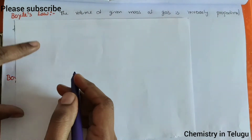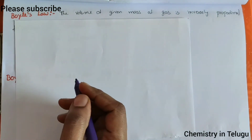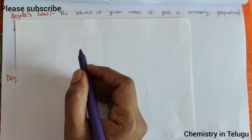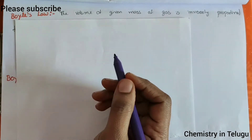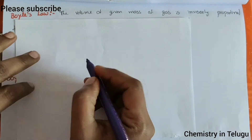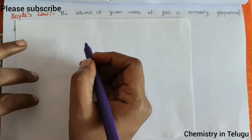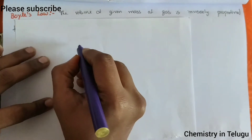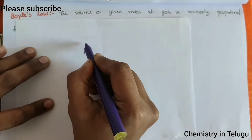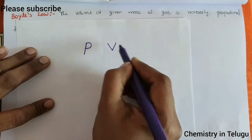Boyle's Law — we will get the basic concept. We will get the volume decrease or the temperature increase. Boyle's Law and Charles' Law — the first letters give us one star concept: P, V, T.